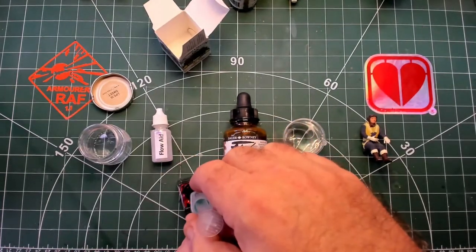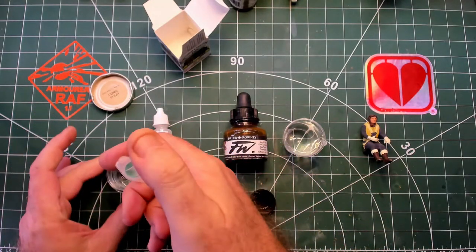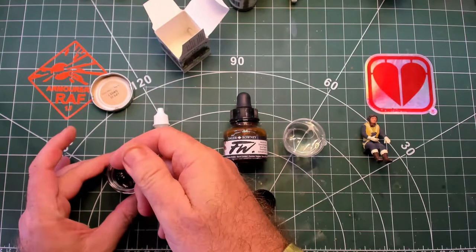Let's take the Winsor & Newton Deep Red ink and measure some out into the empty container that we smeared with washing soap.